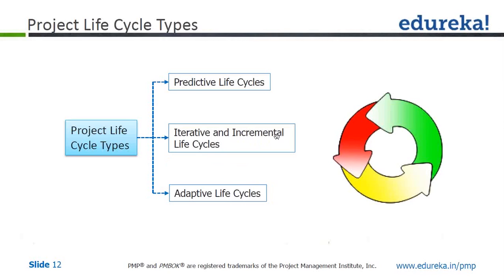The software industry has picked up on these last two very well. In iterative and incremental, what happens is you develop — let's say you have 20 to 25 features to be developed. Maybe in the first iteration you will develop five features, second iteration five features, and so on.